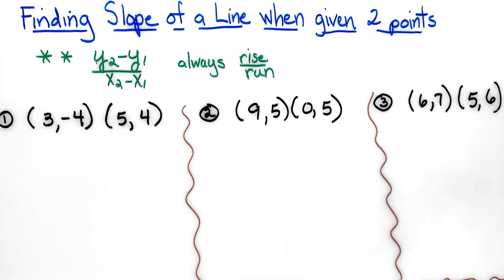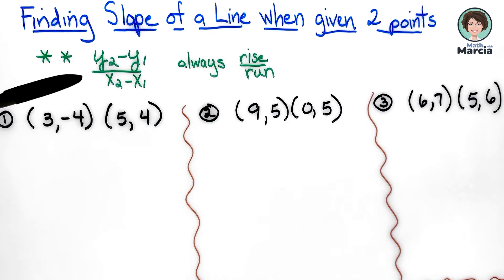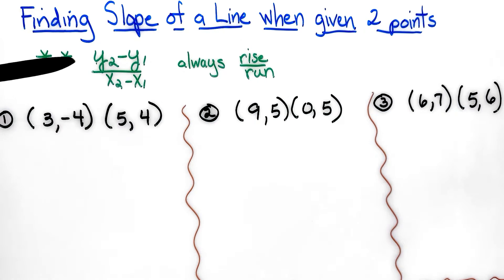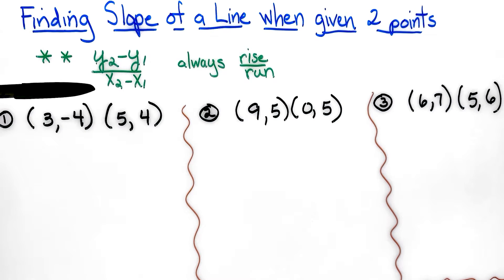For this lesson we are going to be finding the slope of a line when given two points on that line. A very important formula to know is the slope formula, which is always rise over run, but in the format of y2 minus y1 over x2 minus x1.